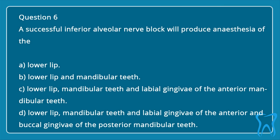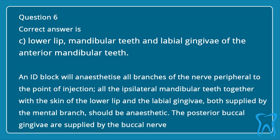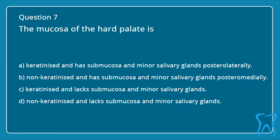Question 6. A successful inferior alveolar nerve block will produce anesthesia of the: A. Lower lip. B. Lower lip and mandibular teeth. C. Lower lip, mandibular teeth and labial gingivae of the anterior mandibular teeth. D. Lower lip, mandibular teeth and labial gingivae of the anterior and buccal gingivae of the posterior mandibular teeth. The correct answer is C. An inferior alveolar block will anesthetize all branches peripheral to the injection point — all ipsilateral mandibular teeth, the skin of the lower lip, and the labial gingiva, both supplied by the mental branch. The posterior buccal gingiva are supplied by the buccal nerve.